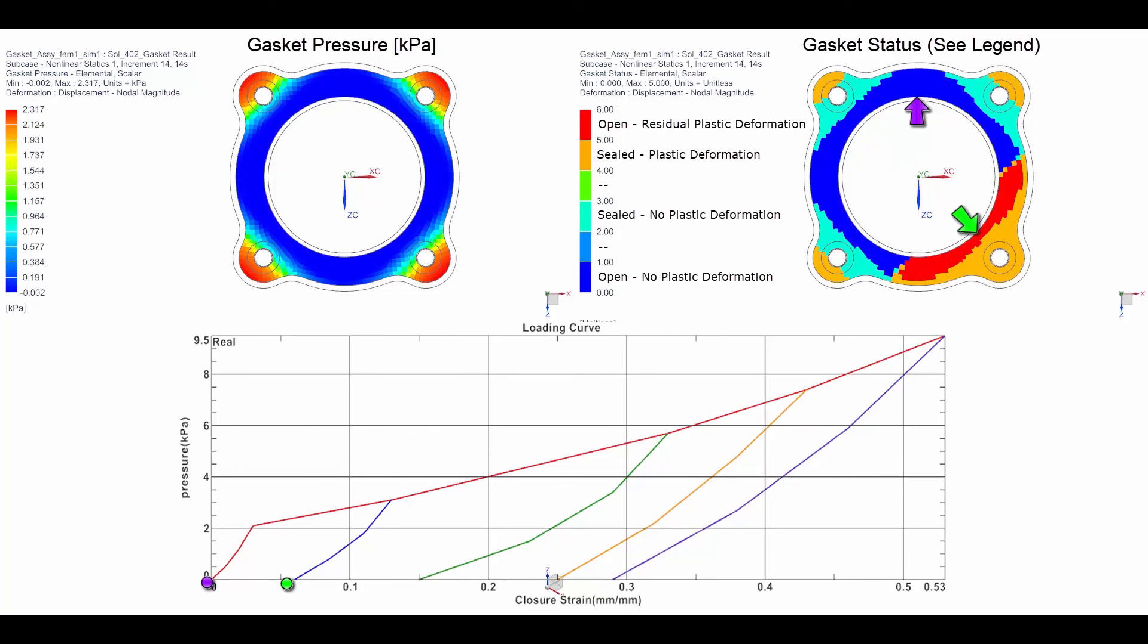Finally, as the pressure increases, the gasket becomes open almost everywhere and the cap is not sealed anymore. This is how you define and post-process a flat gasket in a solution 402. Thank you for watching.